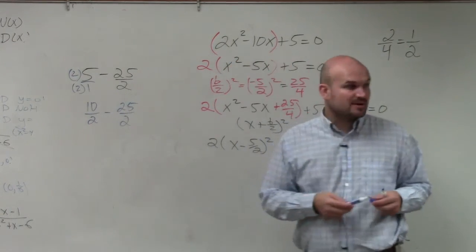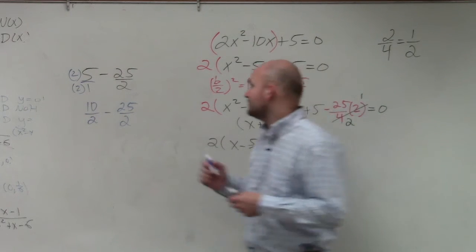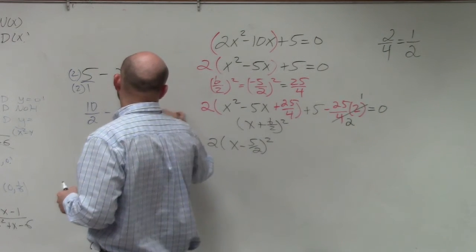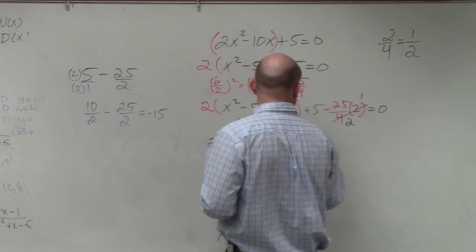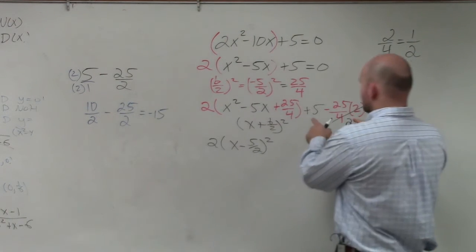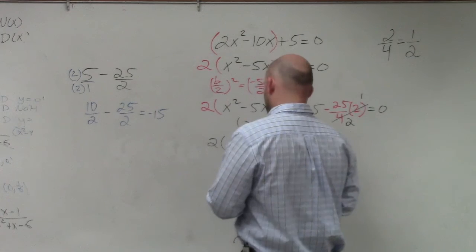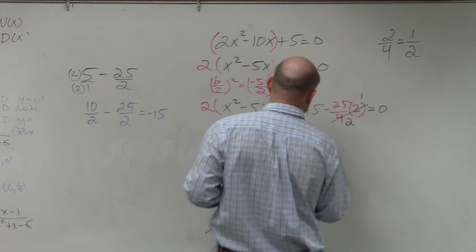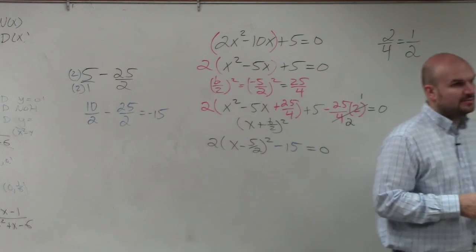So 25 minus, or 10 minus 25 is? Negative 15. Negative 15. OK. So that gives me negative 15 equals 0.